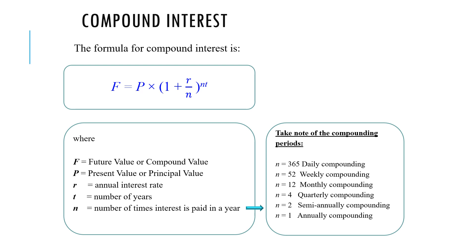These are the compounding frequency terms you need to know. Compounded annually: N equals 1 — you only add interest back to principal once a year. Semi-annually: N equals 2, twice a year. Quarterly: N equals 4, every 3 months. Monthly: N equals 12. Weekly compounding is N equals 52, and daily is N equals 365. You won't see weekly and daily that much — what you'll mostly see is the first four: annually, semi-annually, quarterly, and monthly.